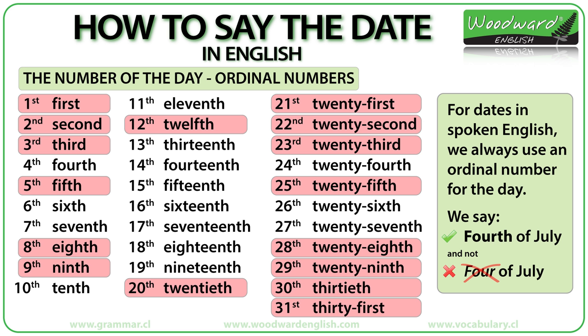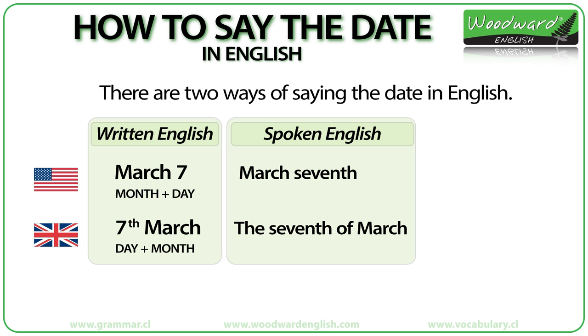However, there are some exceptions. The ordinal numbers highlighted in red in the chart are irregular or have a slight change in spelling. The most important exceptions are for the first three days. We say first, second, and third. Notice when written as numbers they end in ST, ND, or RD. All other ordinal numbers end in TH.